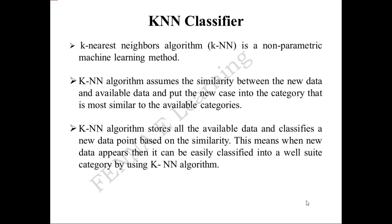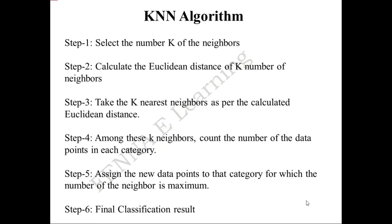In the final stage, the KNN classifier is designed to perform the classification task. KNN is a non-parametric machine learning method and classification is based on measuring the similarity between the new data and the available trained data. The major steps involved are: first, select the K nearest neighbor values; second, calculate the Euclidean distance of K number of neighbors; third, take the K nearest neighbors as per the calculated Euclidean distance; fourth, count the number of data points in each category; fifth, assign the new data point to the category for which the number of neighbors is maximum; and sixth, perform classification.